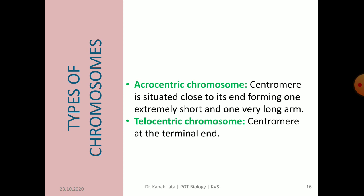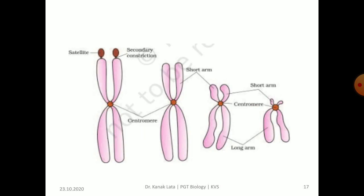In an acrocentric chromosome, the centromere is situated close to its end, forming one extremely short arm and one very long arm. In a telocentric chromosome, the centromere is at the tip of the chromosome and the arms are on one side only. You may observe all four types of chromosomes in the given figure.